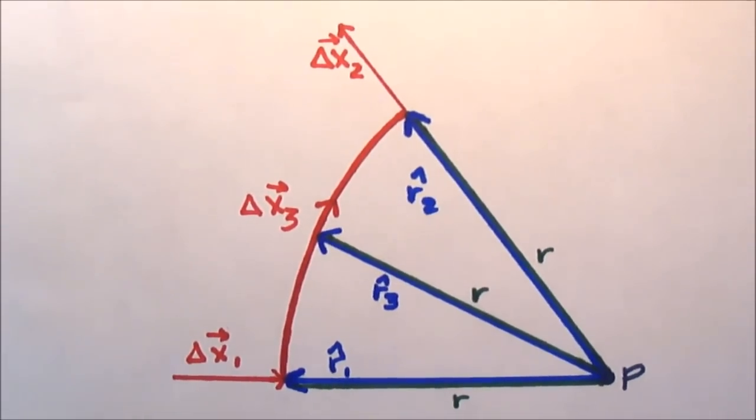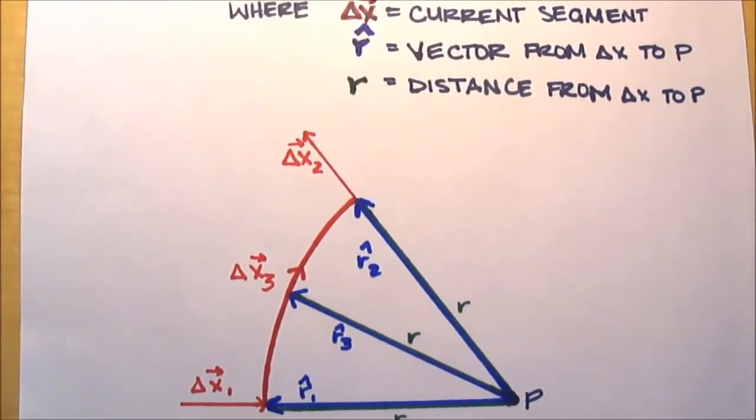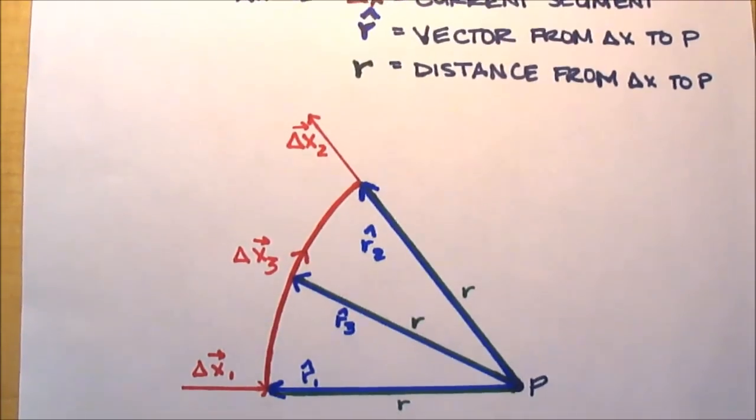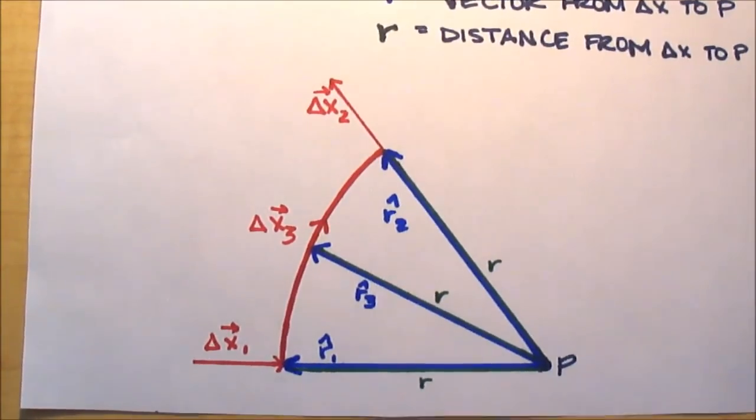Keep in mind, there is a difference between r̂ and r. As I said previously, r̂ is a vector, which means it includes direction, whereas r is just a distance. It's just a number.